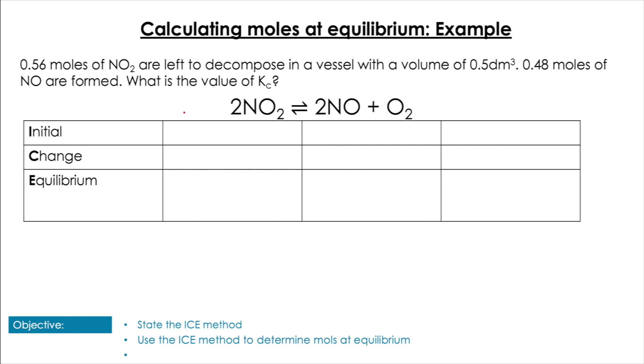The question says we have 0.56 moles of NO₂ left to decompose in a vessel with volume 0.5 dm³, and 0.48 moles of NO are formed. What is the value of Kc? We'll fill in the table with what we know. The products were zero initially because the reactants were left to decompose. We started with 0.56 moles of NO₂, and at equilibrium we have 0.48 moles of NO formed.